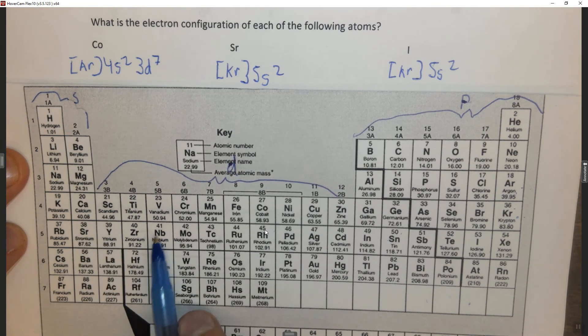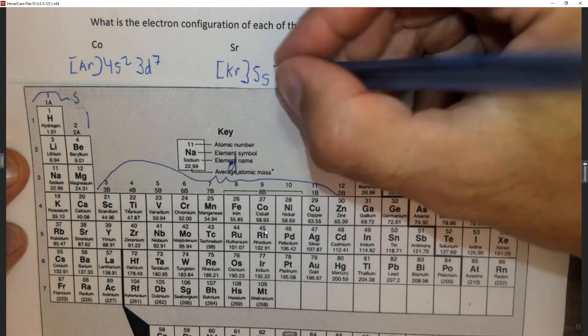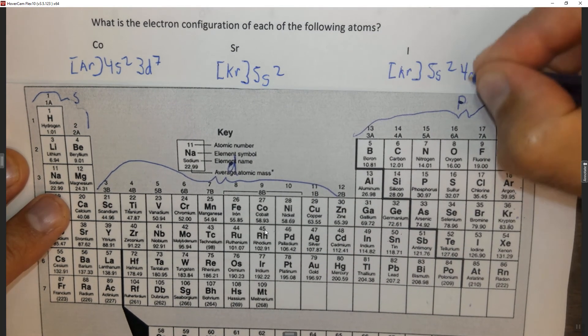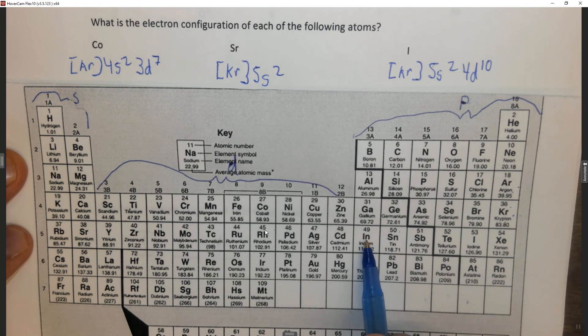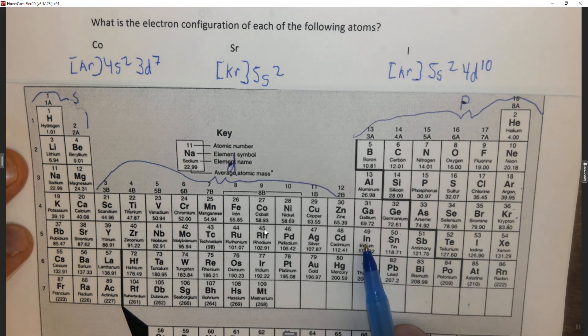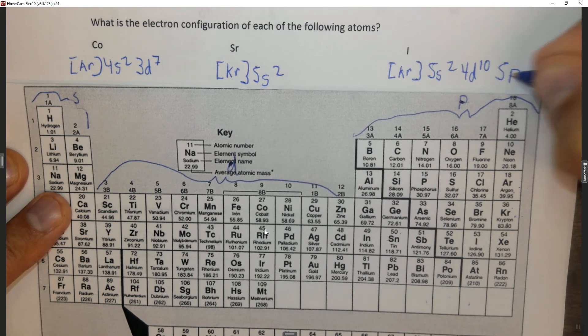And it's 1, 2, 3, 4, 5, 6, 7, 8, 9, 10. So it's the 4d10, followed by iodine. This is now the 5p, remember the p block, 1, 2, 3, 4, 5. So 5p5.